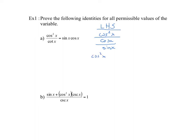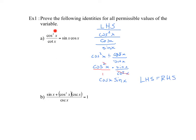So you have cos squared x divided by cos x over sine x. We're going to change this division into a multiplication to make it a little bit easier: cos squared x times sine x over cos x. If you notice, any time you have a numerator by itself it's like dividing over one, so you can cancel out one cos from the numerator with the cos in the denominator. What you're left with is cos x times sine x, which is exactly the same thing on the right-hand side. So we've proven the left-hand side is equal to the right-hand side.